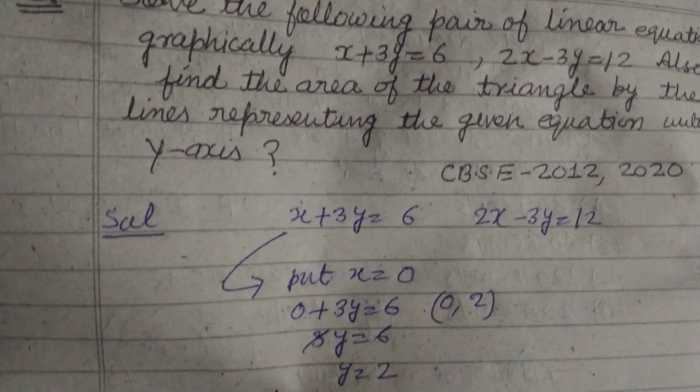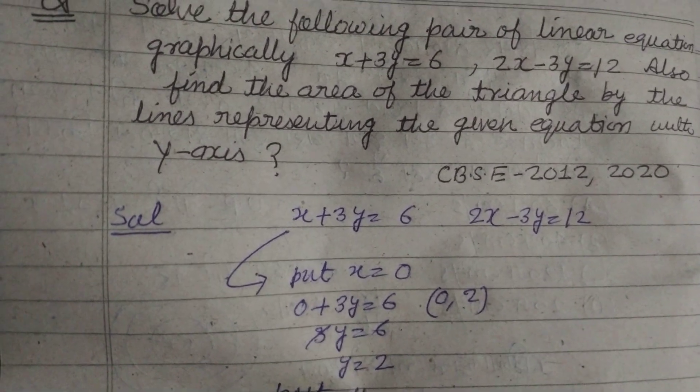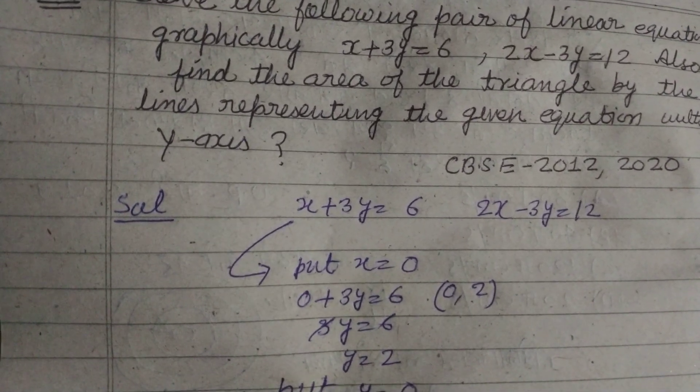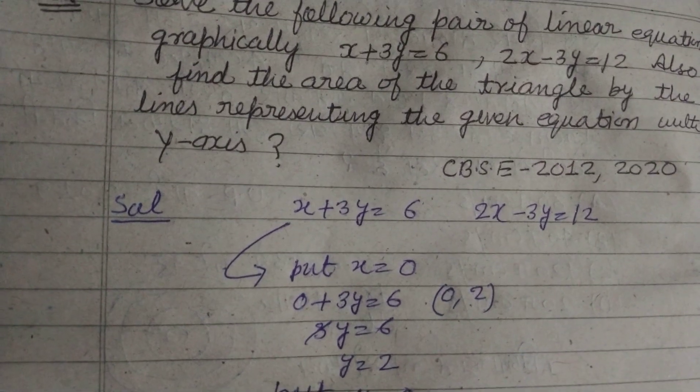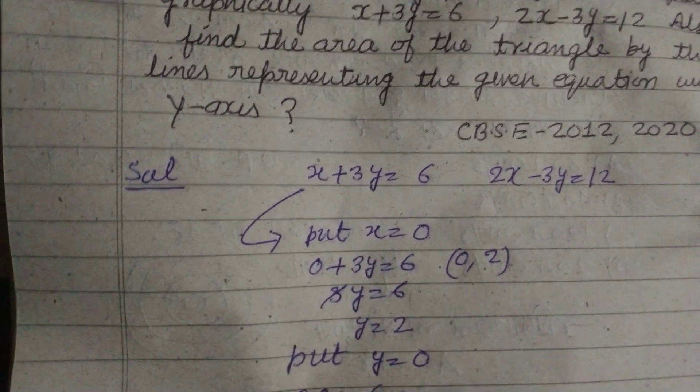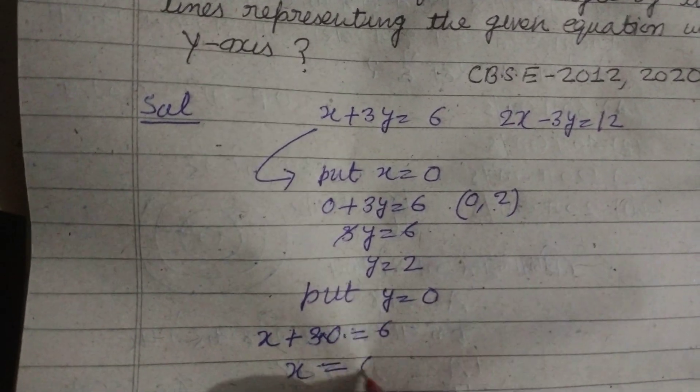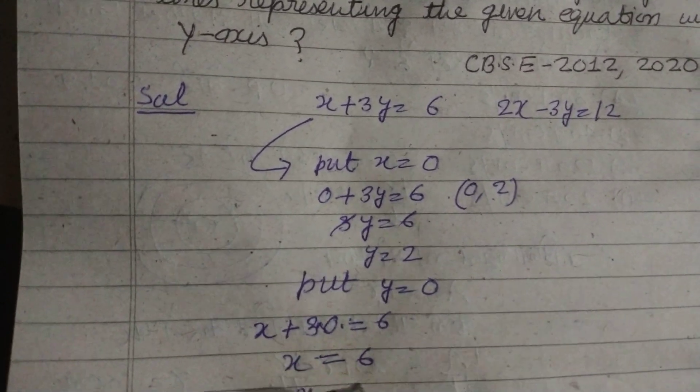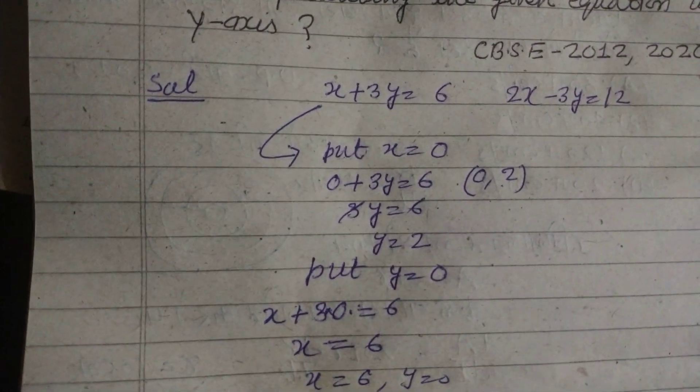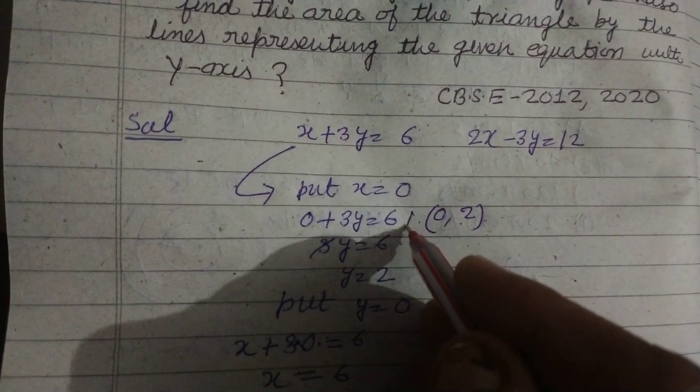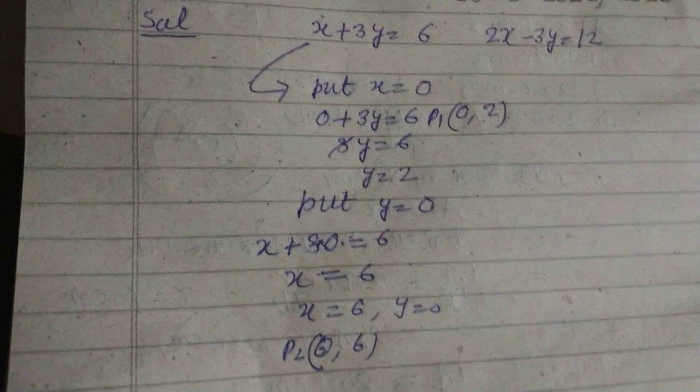Again we put y equal to 0. So x plus 3 into 0 equal to 6. So x equal to 6, and y equal to 0. So 6 comma 0 is another point on this. These are two points on the line so we can draw the line easily.